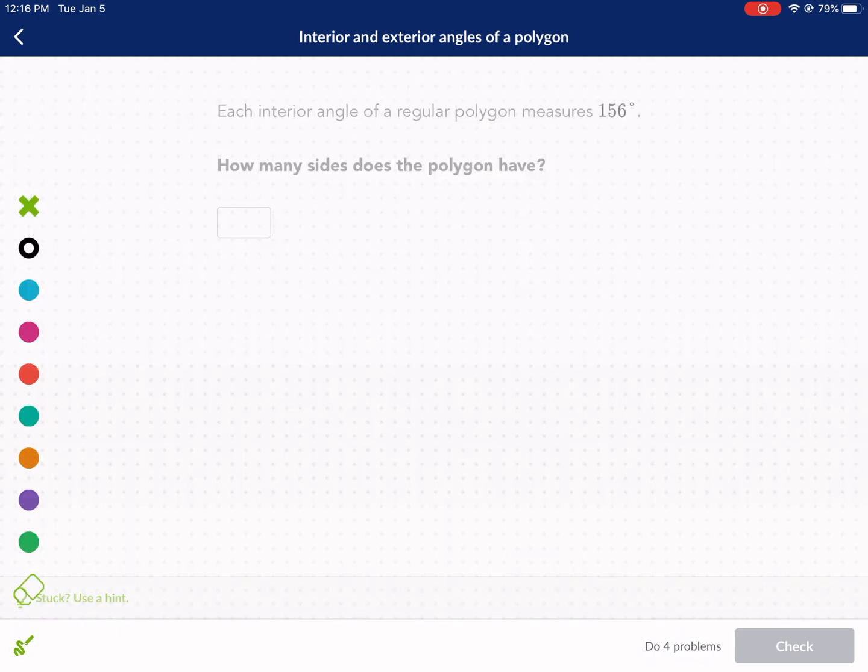I'm going to give you some formulas that you'll need for this. One of the formulas that you're going to need is that the sum of interior angles is equal to n minus 2 times 180. That's the main one you're going to need.